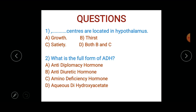What is the full form of ADH? Options: A) antidiplomacy hormone, B) antidiuretic hormone, C) amino deficiency hormone, or D) aqueous dihydroxy acetate.